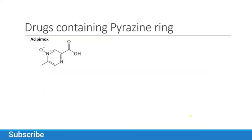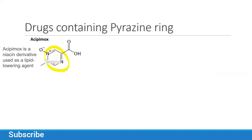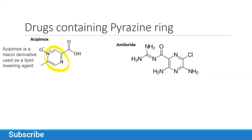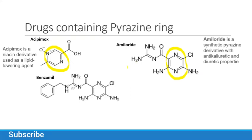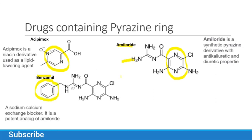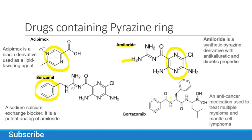Drugs containing the pyrazine ring: amiloride is a lipid-lowering agent that contains pyrazine as its basic structure. Benzamide is an analog of amiloride — the difference is that it has a benzene ring attached to the same core structure. There is also another compound which is an anti-cancer drug that also contains pyrazine in its basic structure.